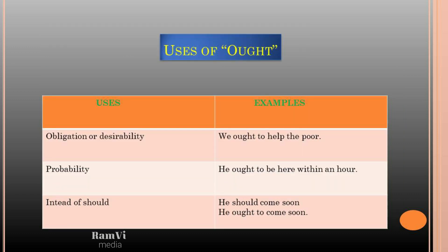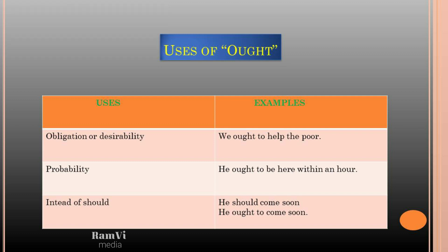The next modal is 'ought'. Ought is used in particular places like obligation, probability, and as a substitute for 'should'. Note that 'ought' is always used with 'to'. First, obligation: 'We ought to help the poor' — it is our duty, so we use 'ought'. Next, probability: 'You ought to be here within an hour' — it is not certain, it's a probability, so we use 'ought'.